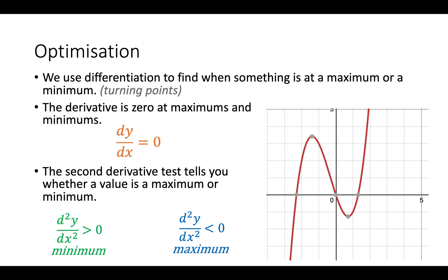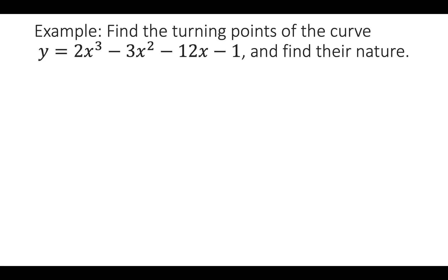We can continue with an example. Here we have y equals 2x cubed minus 3x squared minus 12x minus 1. We're asked to find a turning point of the curve and their nature. When it says find their nature it means to see whether they're a maximum or a minimum. We differentiate that and it becomes dy/dx equals 6x squared minus 6x minus 12.